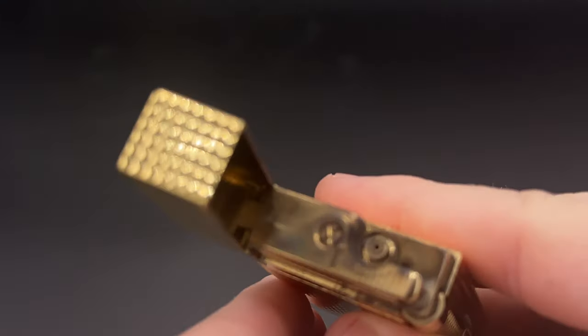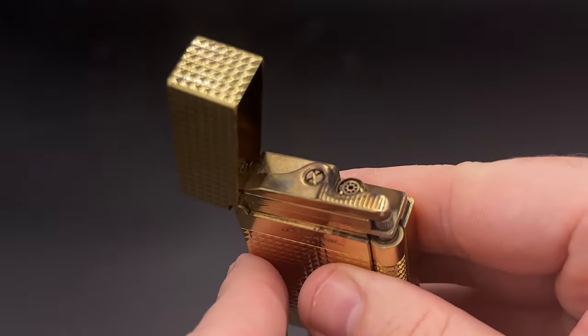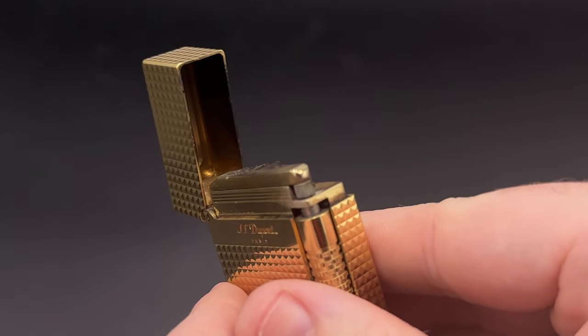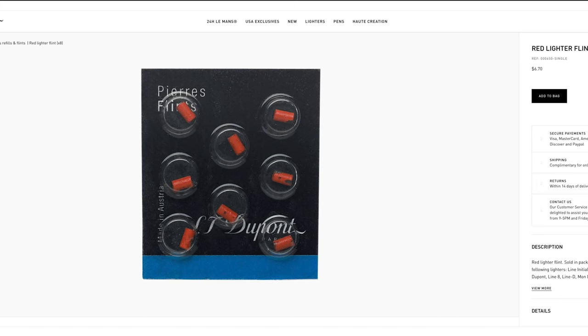And while I won't get into all the specifics here, it is for that screw right there, and then the flint is under there, you basically swap it out. You can get eight for six or seven bucks on the ST DuPont website.